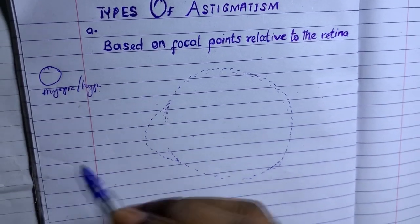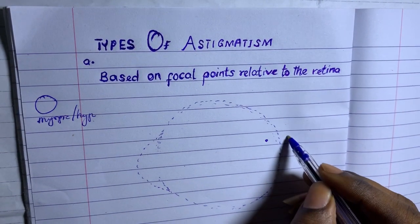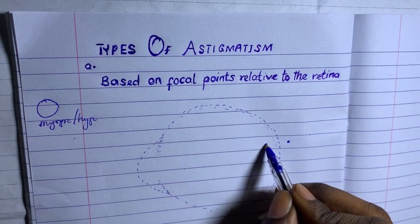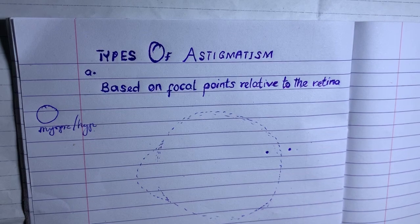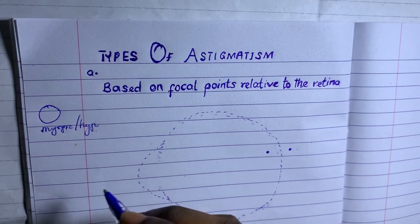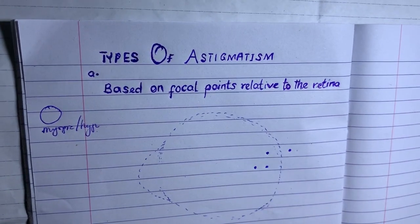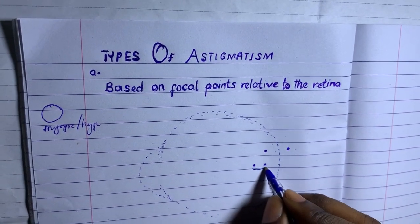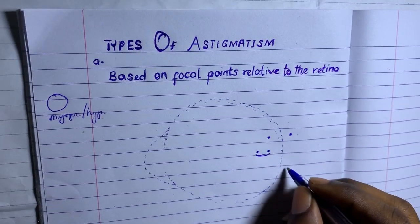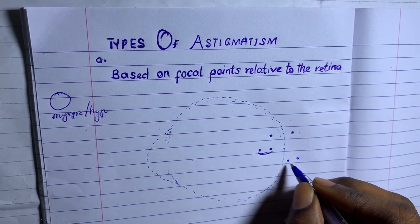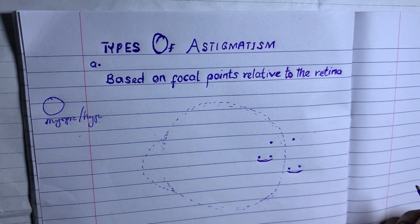One light ray will be focused in front of the retina and some light rays will focus at the back of the retina at the same time. When one focuses in front and one behind the retina, that becomes mixed astigmatism. When both incoming light rays focus in front of the retina, it becomes compound myopic astigmatism. When both focus behind the retina, it becomes compound hyperopic astigmatism.